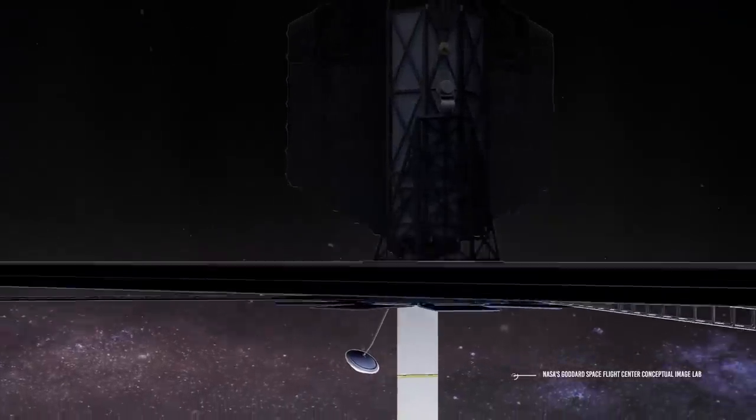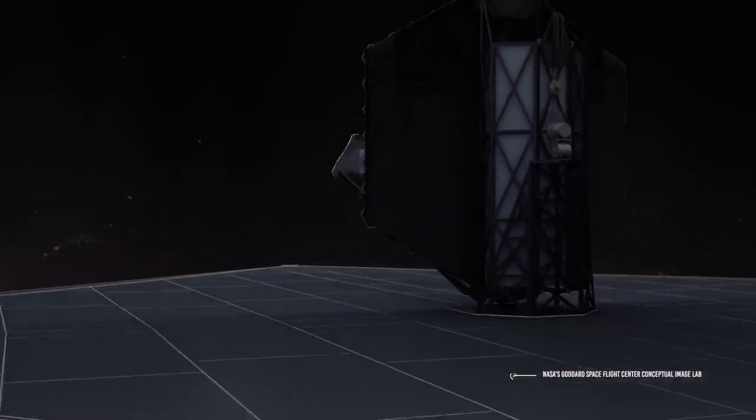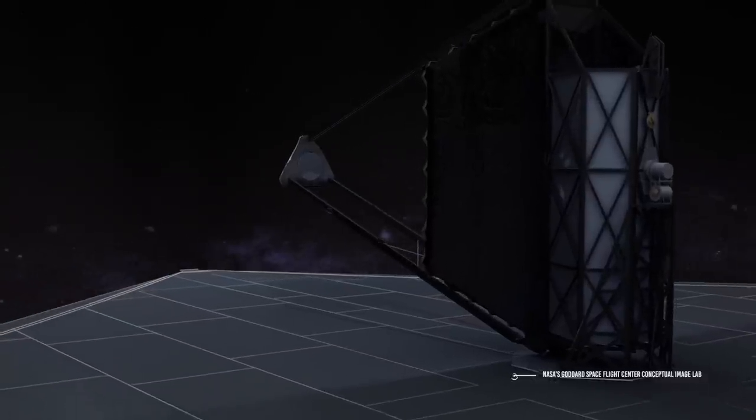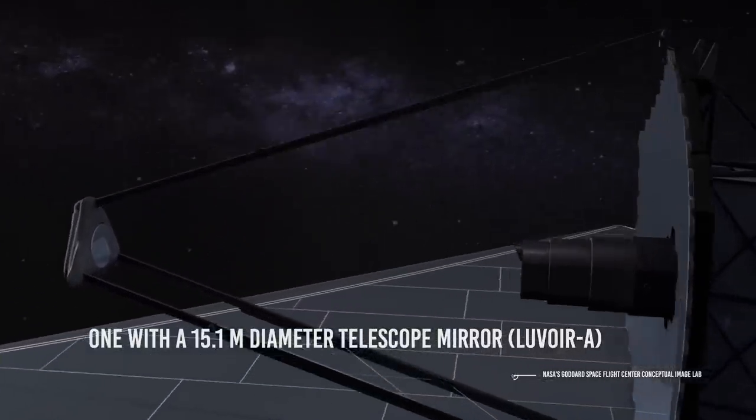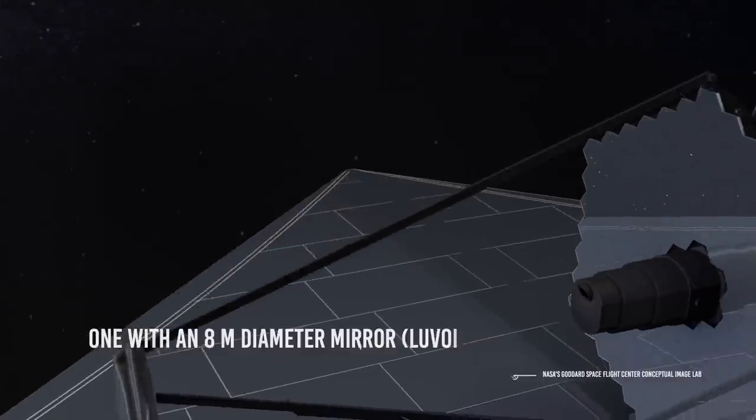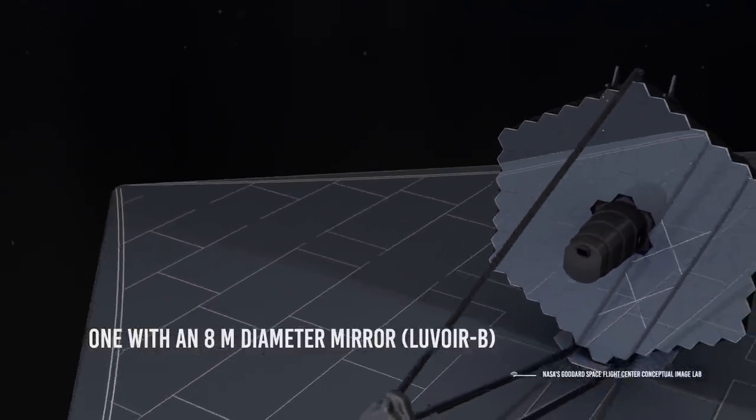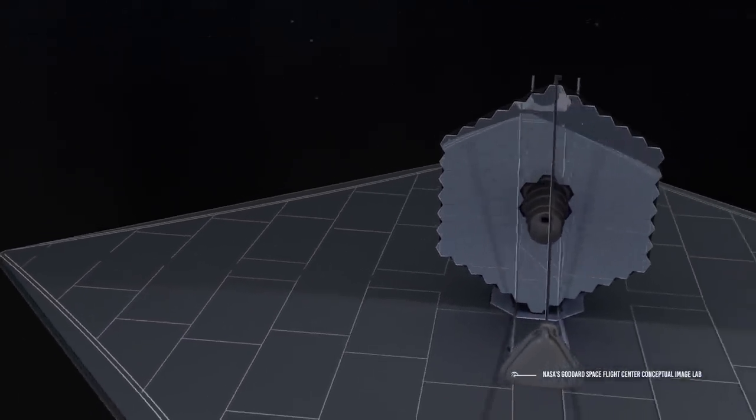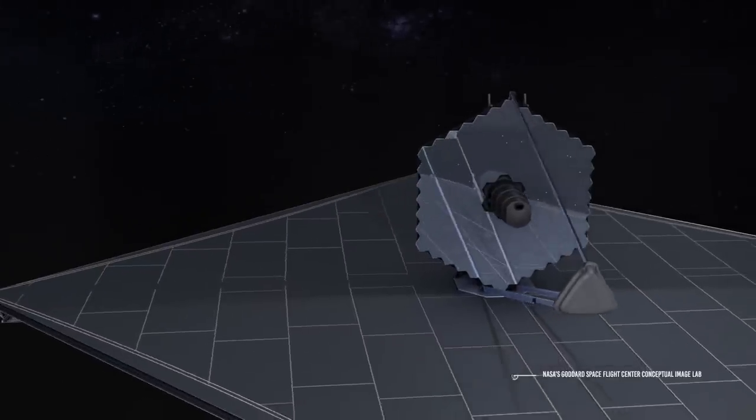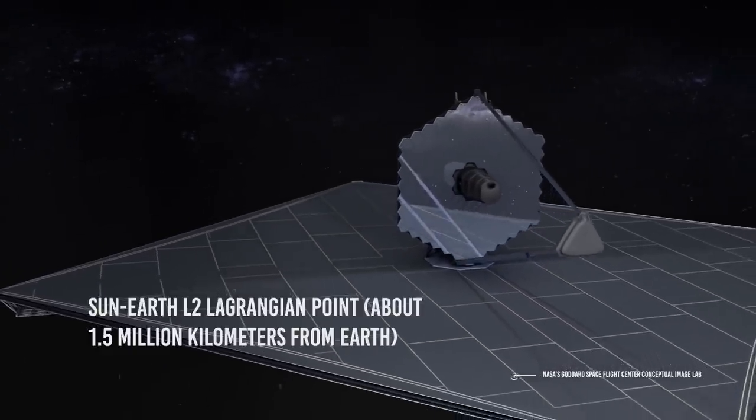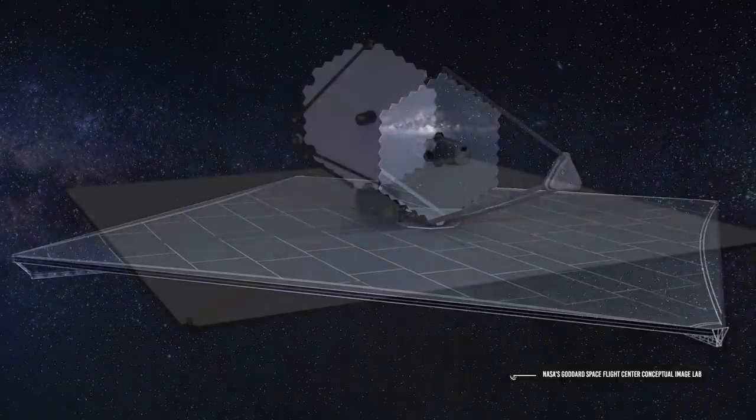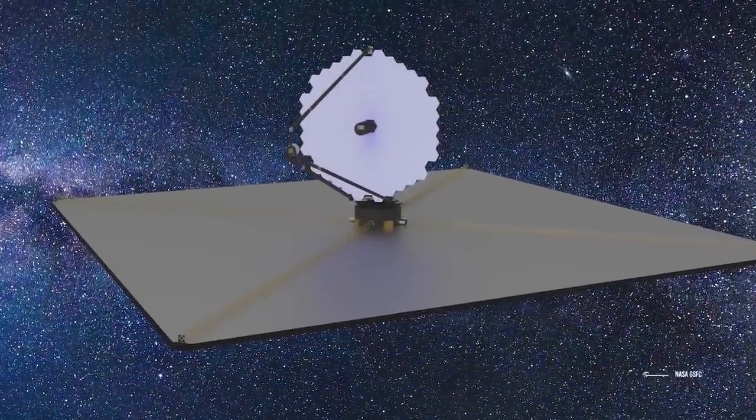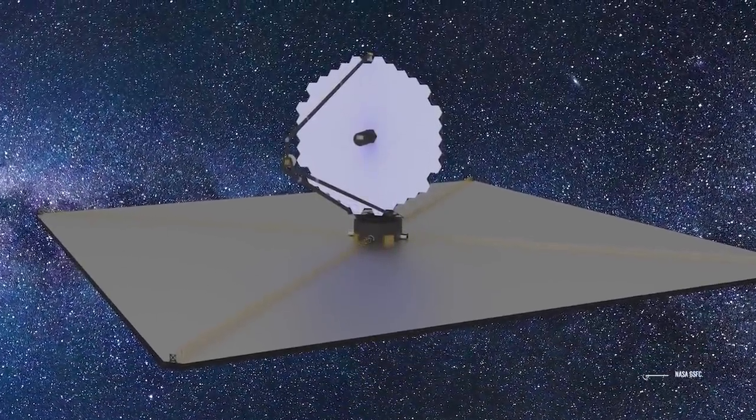The only problem is that the LUVOIR study team has produced designs for two variants, one with a 15.1-metre-diameter telescope mirror LUVOIR-A and one with an 8-metre-diameter mirror LUVOIR-B. Both versions are intended to be serviceable and to operate at the Sun-Earth-L2 Lagrangian point, about 1.5 million km from Earth, where LUVOIR, like Webb, may maintain a stable orbit in the long term.